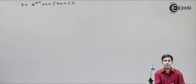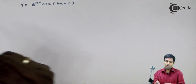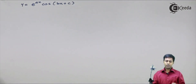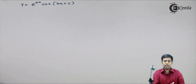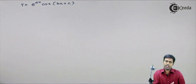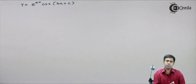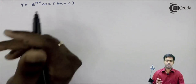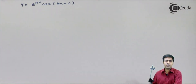Hi guys. In this video, we are going to find out the nth derivative of y equal to e raised to ax cos of bx plus c. To find out the nth derivative, we will proceed to find out y1, that is the first derivative. From y1 we will find y2, from y2 we will find y3, and from the values of y1, y2, and y3, we will predict the value of yn. Let us start with the first derivative.